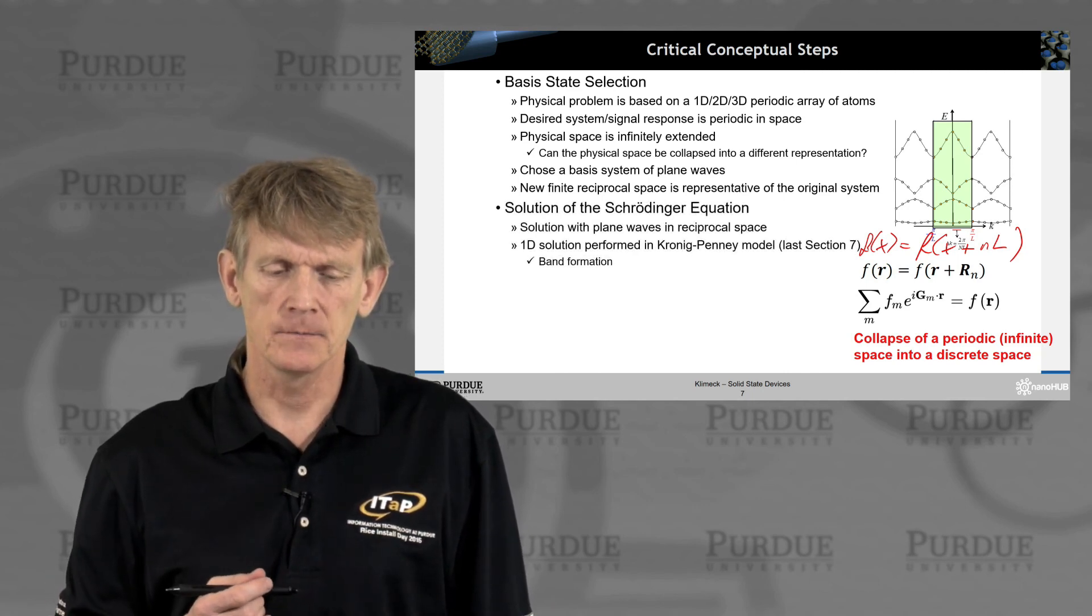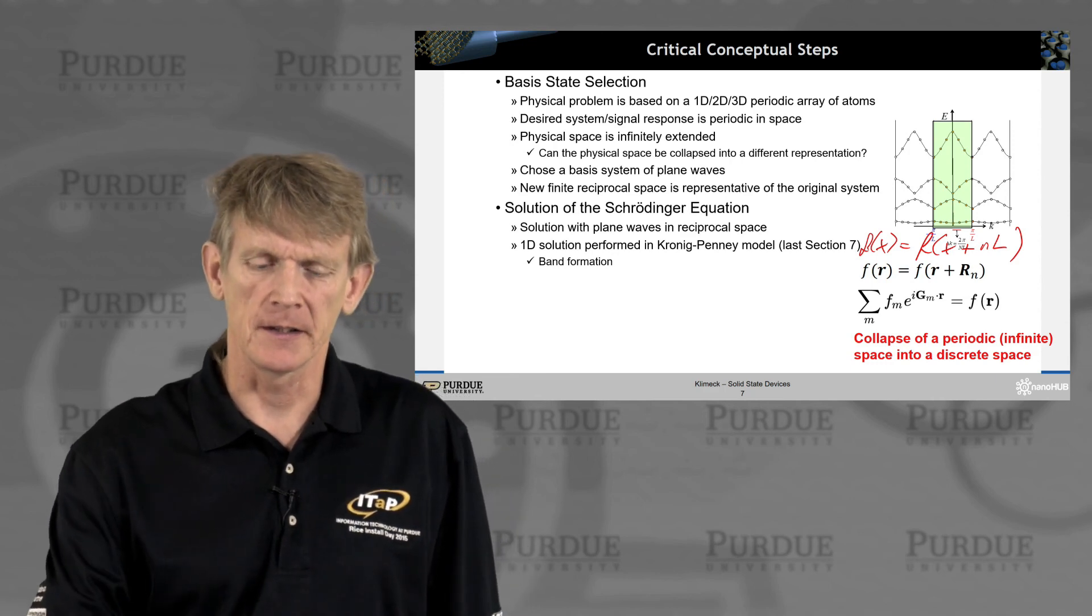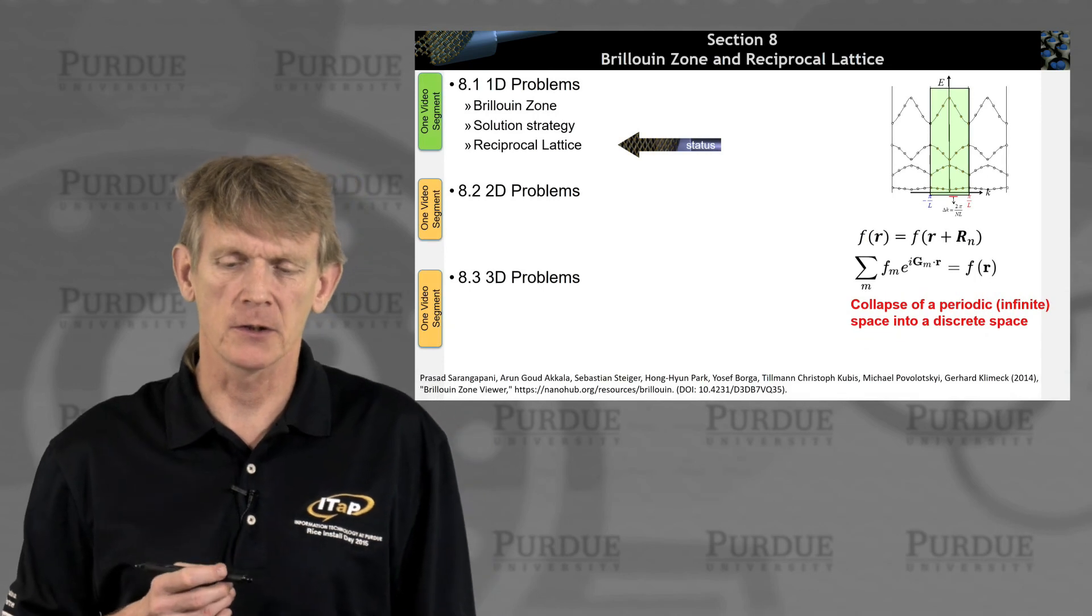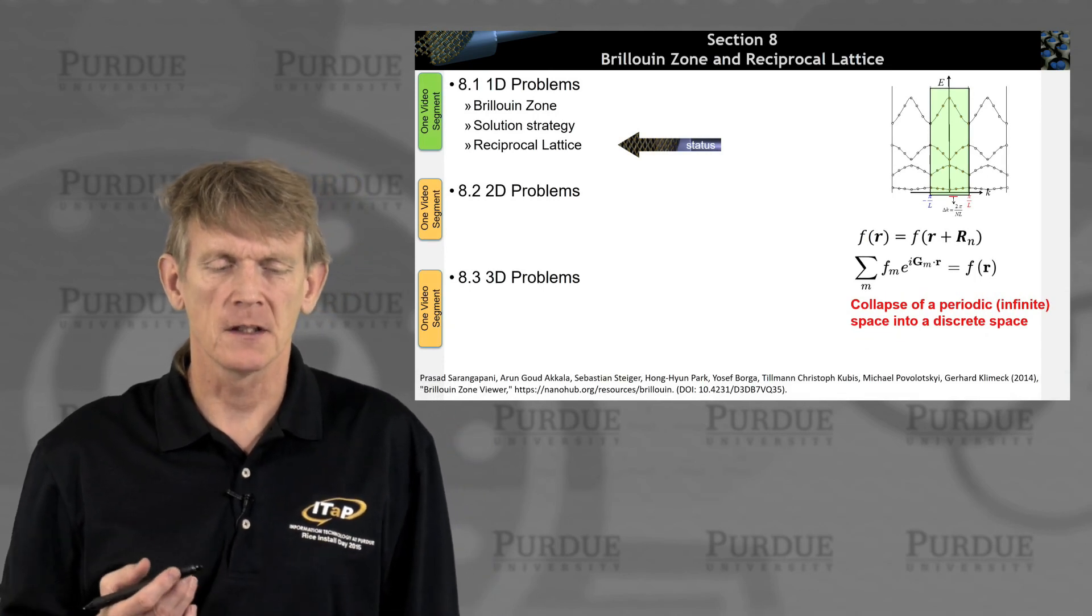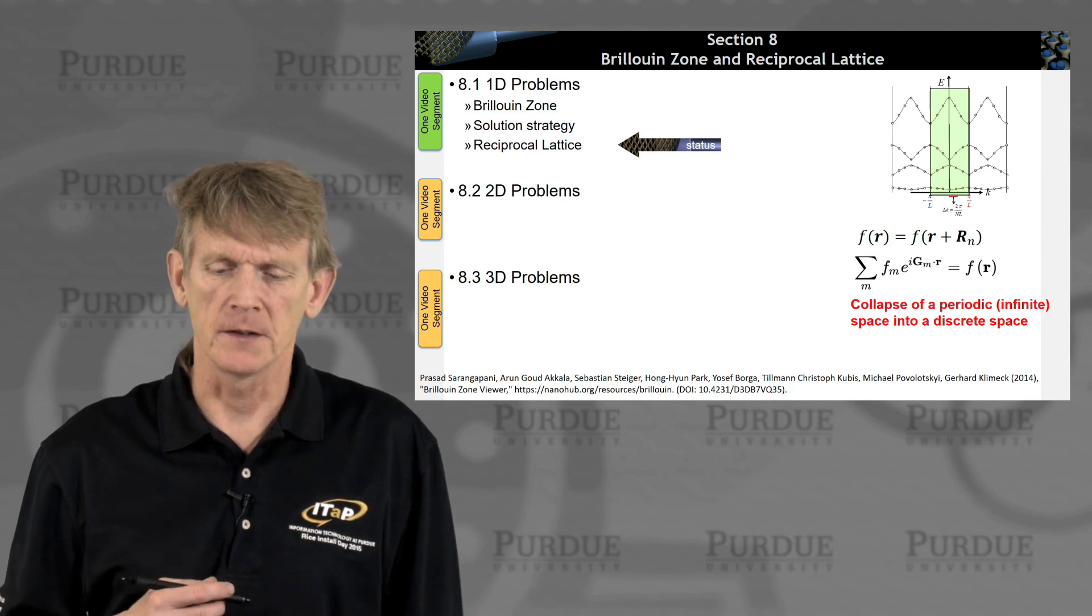And here we solved the Kronig-Penney model in one dimension, and we did that in the last section, and now we're going to look at more details of 2D problems and 3D problems as we expand from 1D.